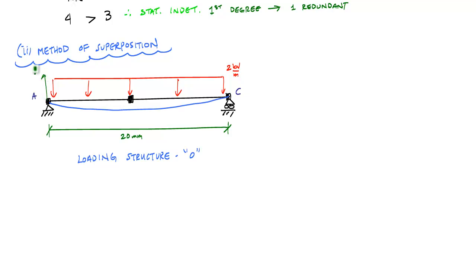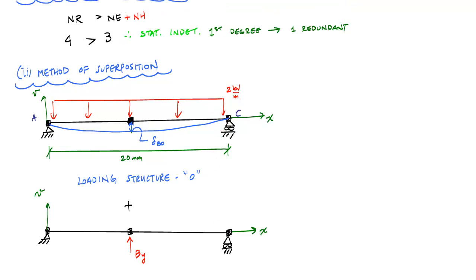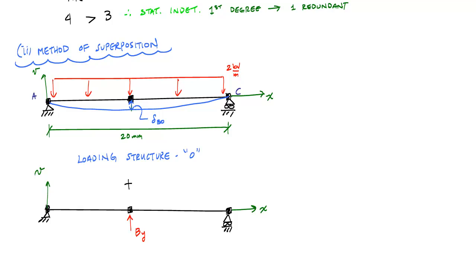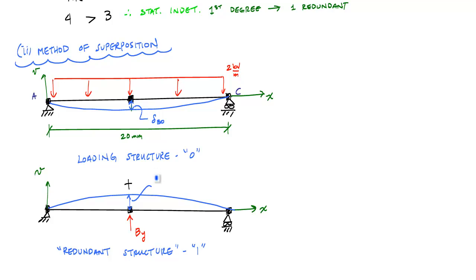I look at the deflected shape associated with the loading structure. Defining coordinates so that upward is positive displacement, I notice there is a deflection downwards at B. I call the magnitude of this deflection delta_B0. By the principle of superposition, I introduce a second beam where the vertical reaction B_Y is reapplied as a concentrated load. This redundant structure — the one structure — produces an upward deflected shape at B with magnitude delta_B1.